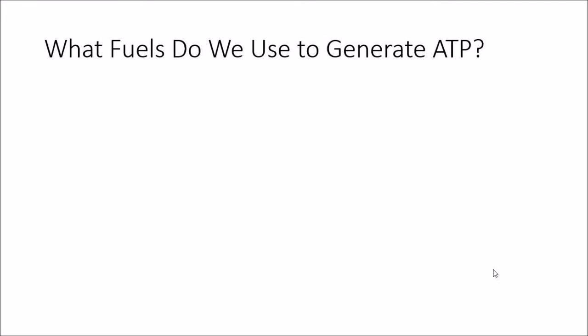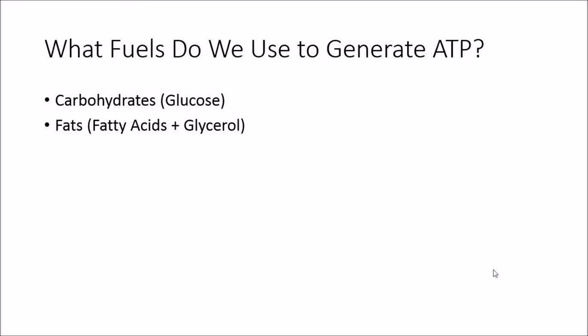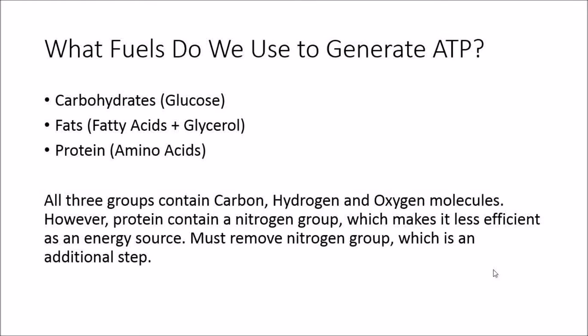What fuels do we use to generate ATP? Carbohydrates in the form of glucose, fats as fatty acids and glycerol, and proteins as amino acids. Fats yield the most energy, but carbohydrates are the most efficient fuel source. Protein contains a nitrogen group that must be removed — an extra step making it inefficient, only used in prolonged exercise or starvation. Fats take longer to break down due to their larger carbon-hydrogen-oxygen structure compared to carbohydrates.